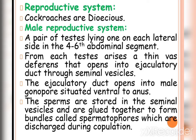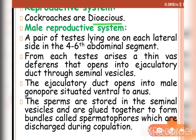Cockroaches are dioecious, meaning male and female reproductive organs are present in different individuals. In the male reproductive system, a pair of testes is present on the lateral side of the body in abdominal segments 4 to 6.